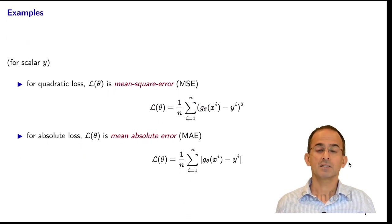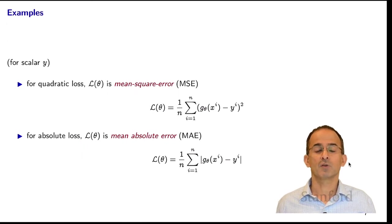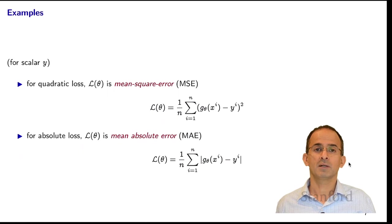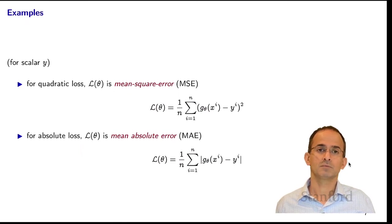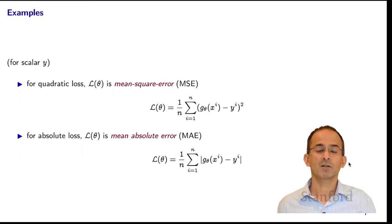Here are some more examples of empirical risk. If you have quadratic loss and scalar y, then the empirical risk is the mean square error. If you have scalar y and an absolute loss function, then the empirical risk is the mean absolute error.